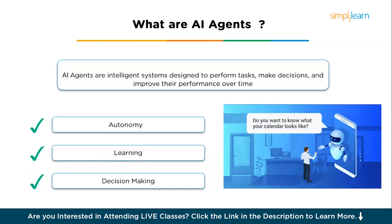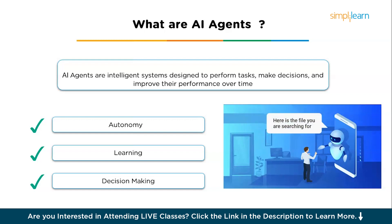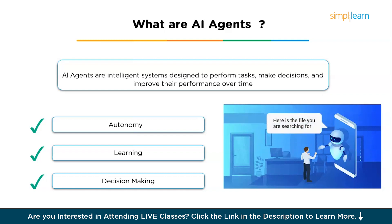Learning is the ability of an AI agent to improve its performance over time by processing and analyzing data. This is typically achieved through machine learning techniques, where the agent refines its model as it encounters more data. For example, a chatbot might get better at understanding customer queries after handling hundreds of conversations, learning which responses are most helpful.